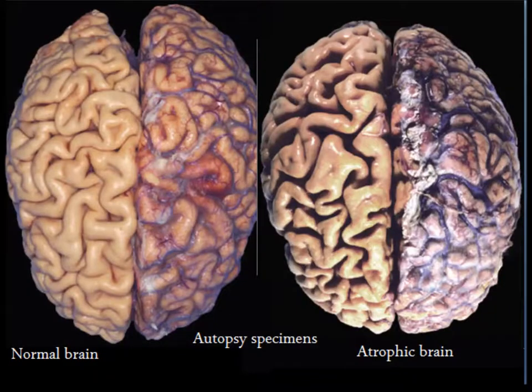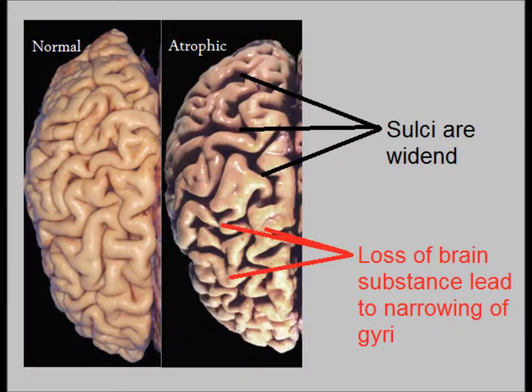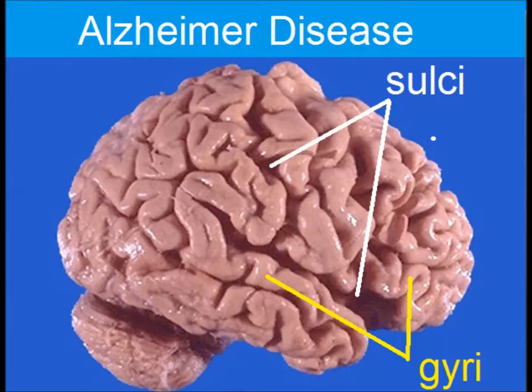This is the normal brain on the left side and the atrophic brain on the right side. You can appreciate the sulci, or widened spaces between the gyri, and the loss of brain substance leading to narrowing of the gyri.